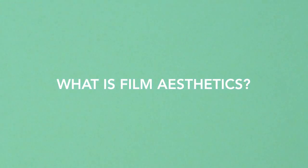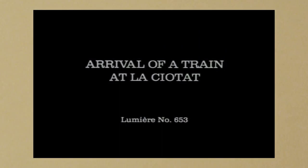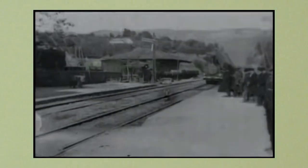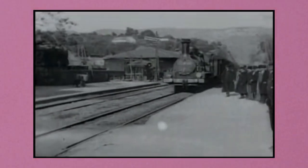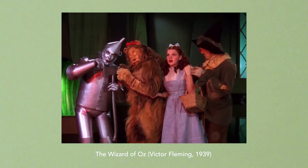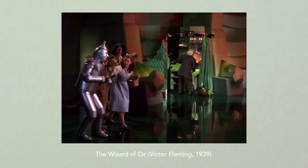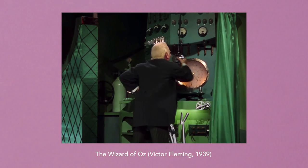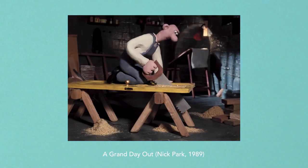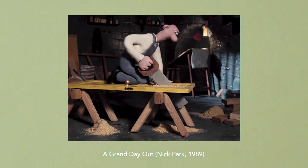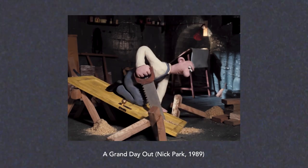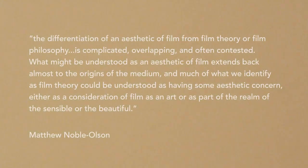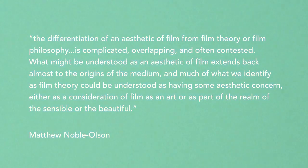Perhaps because the advent of film was born out of technological innovation rather than artistic ambition, early discussions surrounding the new medium were preoccupied by the question of whether or not film should be considered an art form, and if so, what its constituent elements were. In this way, seminal writings on film are often infused with an awareness of this ontological ambiguity, even if explication of this topic is not the primary goal. This is in part why film aesthetics, as a subfield of film studies, is difficult to define. Matthew Noble Olsen touches on this issue when he writes that the differentiation of an aesthetic of film from film theory or film philosophy is complicated, overlapping, and often contested.